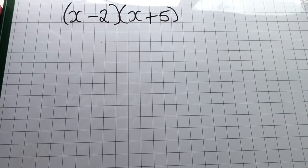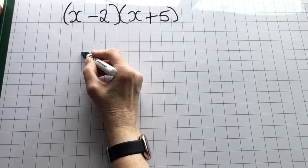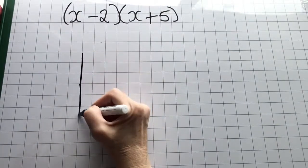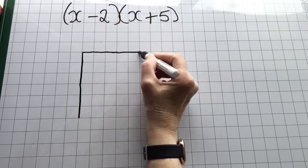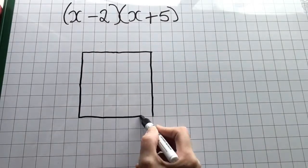Here I have another two expressions to multiply together. Each expression has two terms in it. So again I make a 2 by 2 grid.